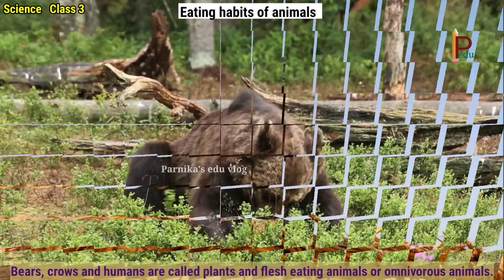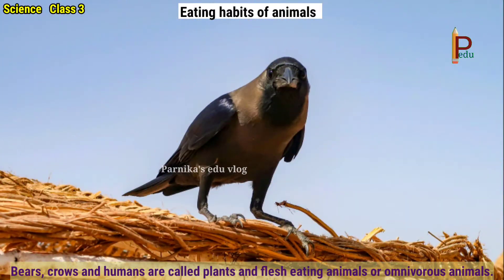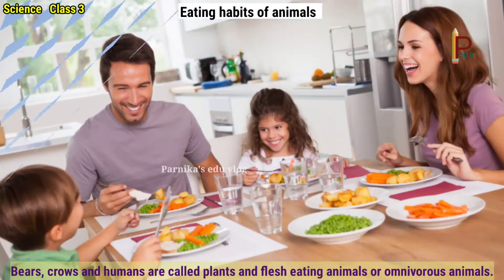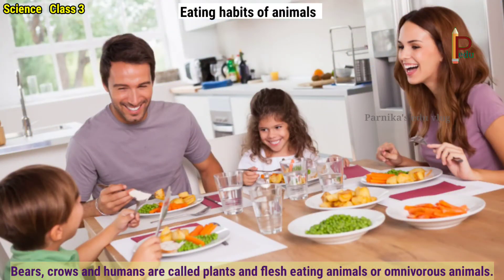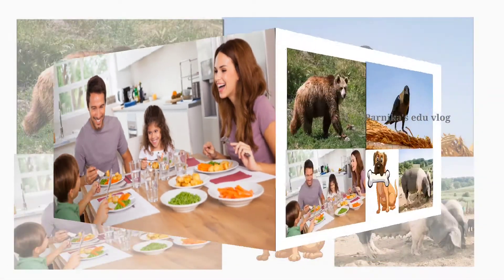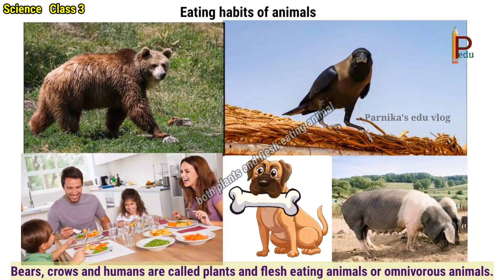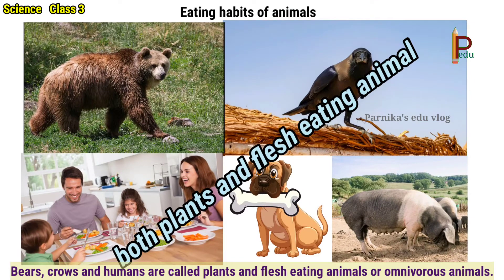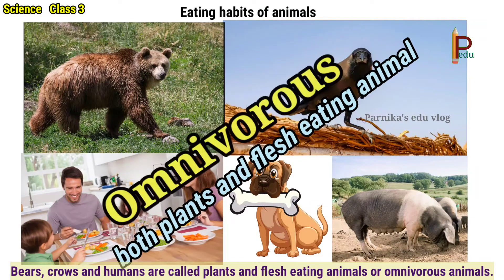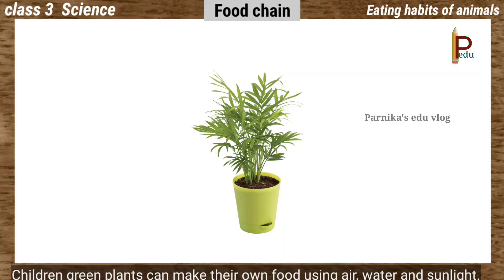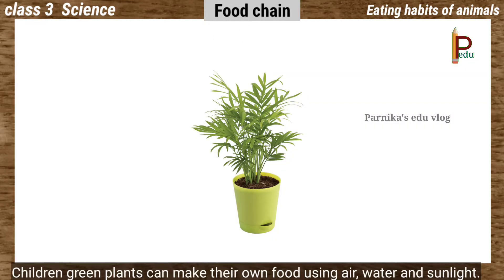Some animals eat plants as well as the flesh of other animals. They are omnivorous animals, such as bears, crows, and humans. These are called plant and flesh eating animals or omnivorous animals.